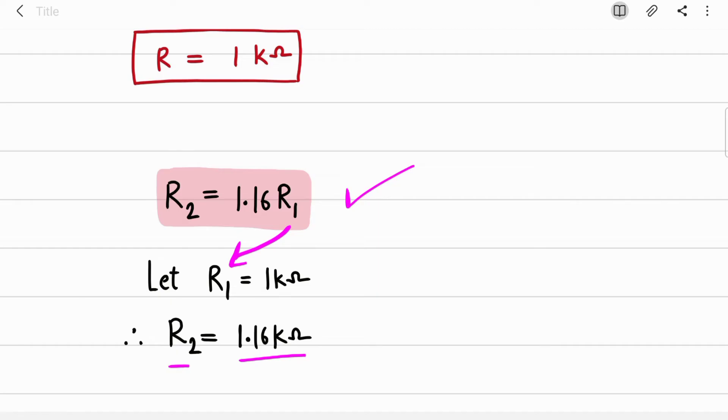In some universities they tell you to convert this value to the standard value of resistor. So if you know standard values you can take any standard value around this calculated value and write that, otherwise you can keep it as it is. So you assumed C and calculated R, then you assumed R1 and calculated R2.